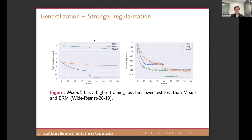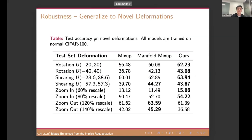And we also show the generalization. So we plot the training loss and the test loss. As we can see, the MixupE has a higher training loss, but has a lower test loss, which means we have a smaller generalization gap, and we have a better generalization, right? So we tested this on a wider ResNet architecture. Finally, we also tested the robustness of our model. We do some transformations on the test dataset with rotation, shearing, zooming, and zoom out. And we just follow the experiment setup from the manifold mixup. But as we can see, we achieved better robustness compared to the mixup and the manifold mixup.